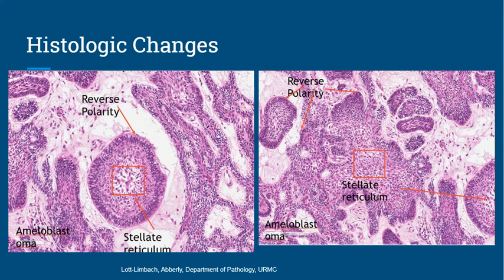The histology of ameloblast cells in patients with ameloblastoma is much different from that of normal ameloblast cells. As you can see in the picture, ameloblastoma cells almost always demonstrate reverse polarity, where the nucleus of the peripheral cells is away from the basement membrane, and stellate reticulum, where the center of the cluster of cells looks similar to a star.